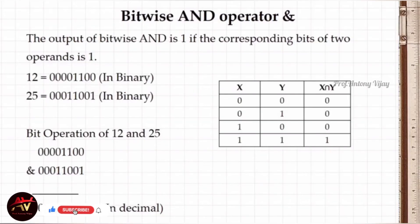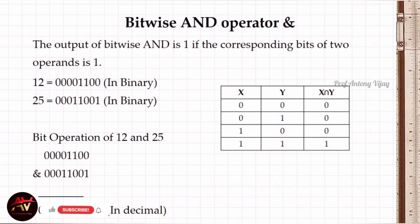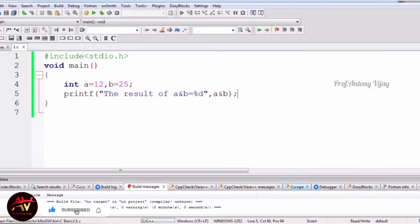Going back to the slides: a = 12 and b = 25 in binary — applying bitwise AND (both x and y must be 1), the result is 8. For bitwise OR (pipeline symbol |), the result is 29. Using OR truth table (either bit being 1 gives 1), converting binary 12 and 25 with OR gives binary result that converts to decimal 29.